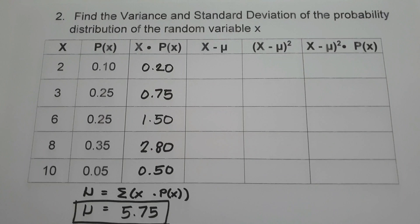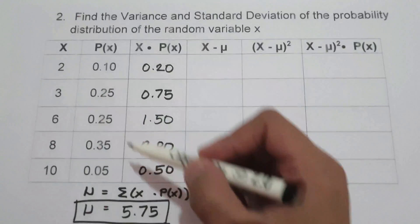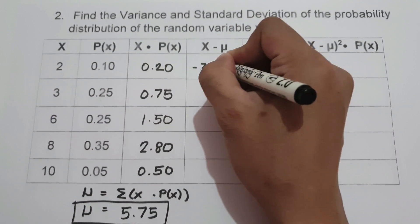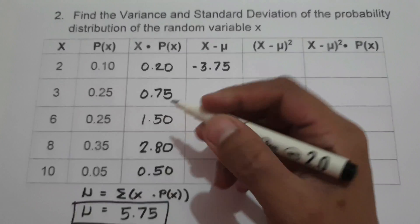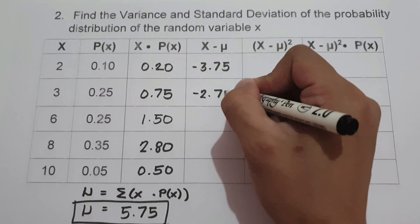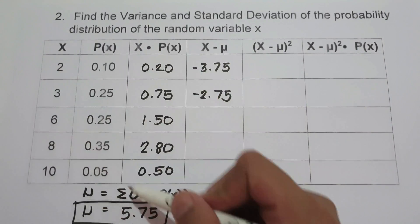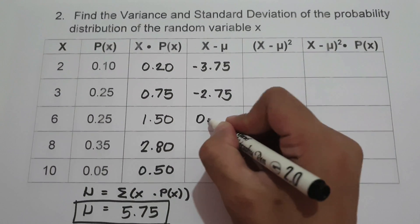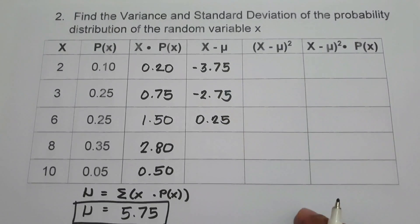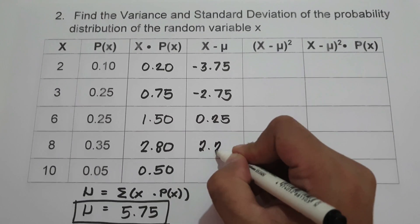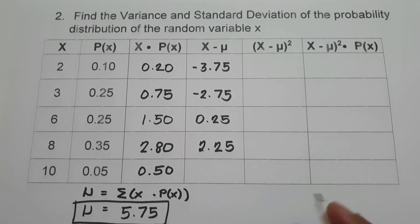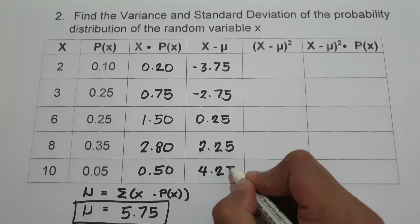Next, we subtract the mean from each value of x: 2 minus 5.75 = negative 3.75; 3 minus 5.75 = negative 2.75; 6 minus 5.75 = 0.25; 8 minus 5.75 = 2.25; and 10 minus 5.75 = 4.25.